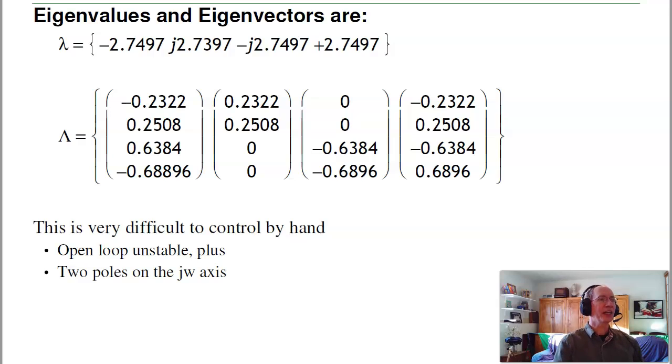For this system, I have four poles and four eigenvectors. The eigenvalues are at ±j2.7, ±j2.74. It's unstable oscillatory, but one of the three or four poles is actually decent. This is a very difficult system to control by hand. It's open loop unstable, plus I've got two poles on the jω axis.